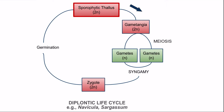In diplontic life cycle also, there is only one type of thallus present, but this thallus is sporophytic or diploid. In the sporophytic thallus, diploid gametangia are present. In the gametangia, at the time of gamete formation, meiosis or reduction division occurs and gametes are the only haploid stage in the life cycle. Soon after the formation of gametes, gametes fuse and after syngamy, a diploid zygote is formed. This zygote germinates to form the diploid sporophytic thallus.